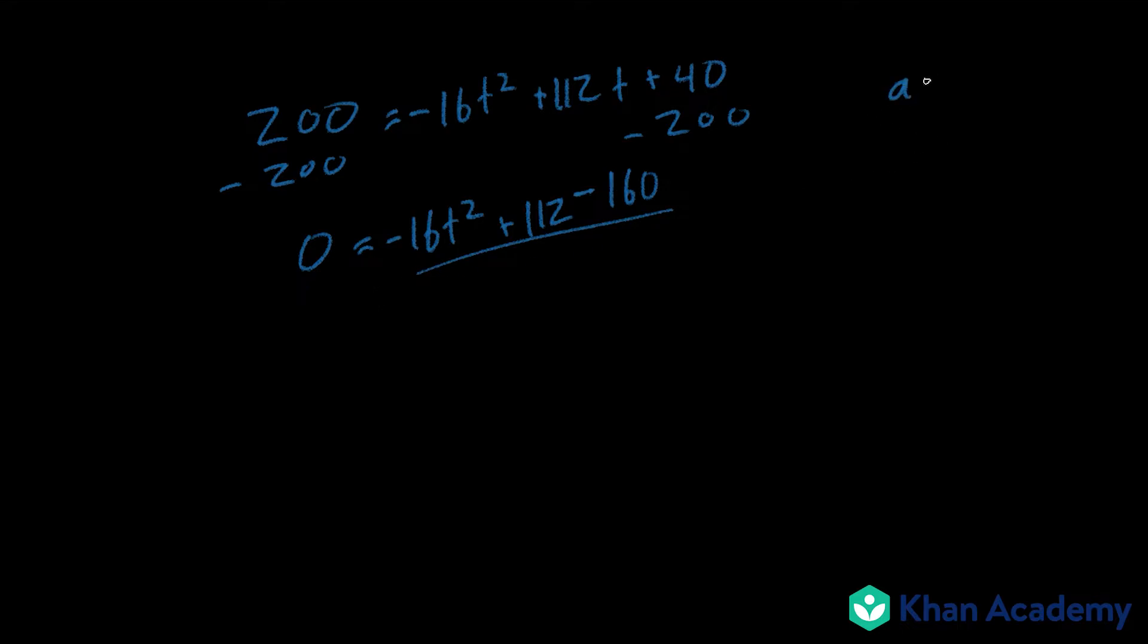It follows the same formula as earlier: ax squared plus bx plus c. So now when we simplify this it should give us negative 16 outside the parentheses and inside is t squared minus 7 t plus 10.